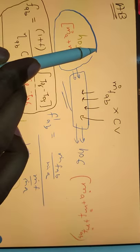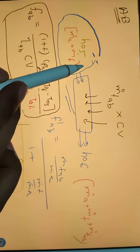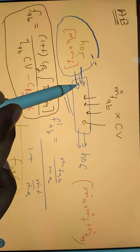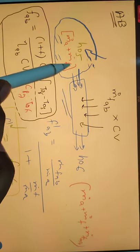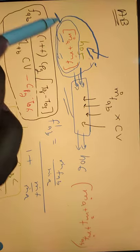So h naught 5 and mass flow rate of air plus fuel, that is nothing but hot gases, right? So they are entering the afterburner.